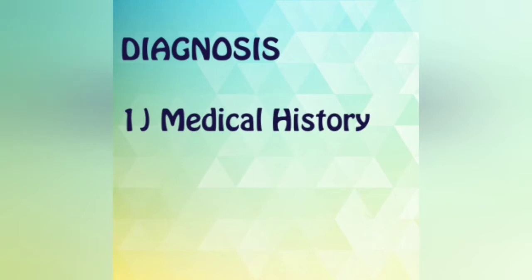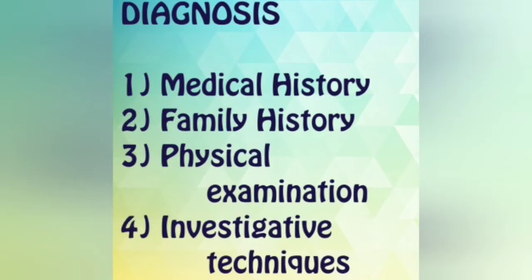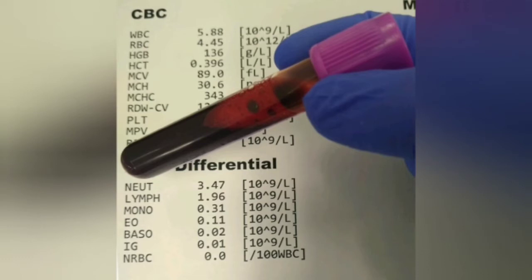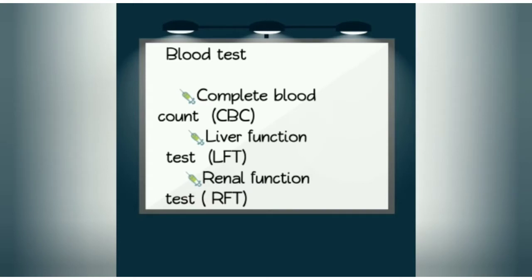By observing these signs and symptoms, a large part of diagnosis is complete from the medical history itself. Moving on to diagnosis, the medical history of the patient including family history is to be taken first, followed by physical examination and investigative techniques. The first investigative technique is a complete blood count. It can look for anemia due to bleeding — a low RBC count indicates anemia.